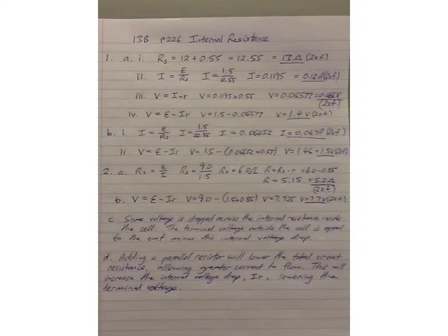So number 1 talks about a cell with an EMF of 1.5 volts and an internal resistance of 0.55 ohms. Question A. A lamp of resistance 12 ohms is connected to the cell. Calculate the total resistance of the circuit.